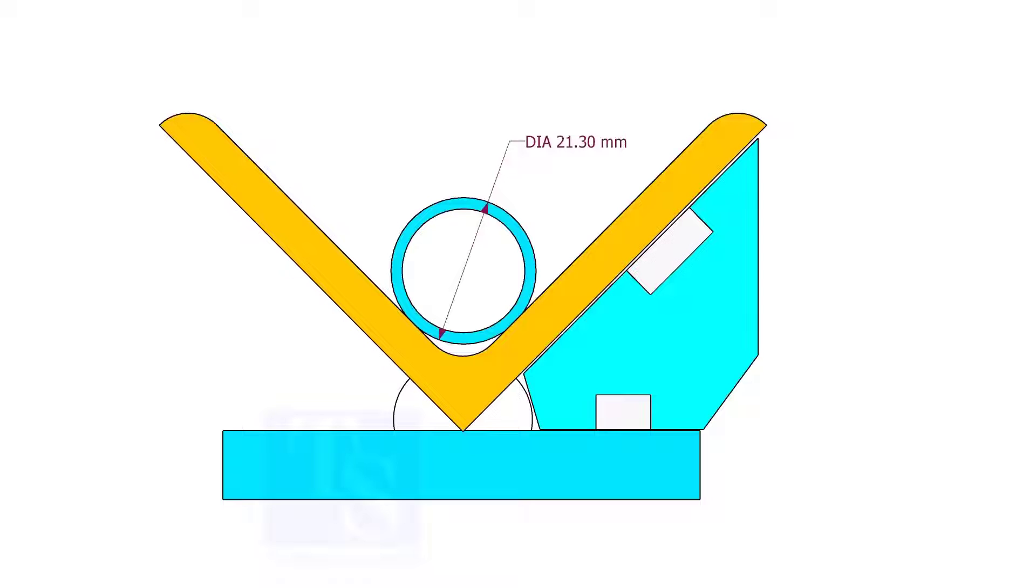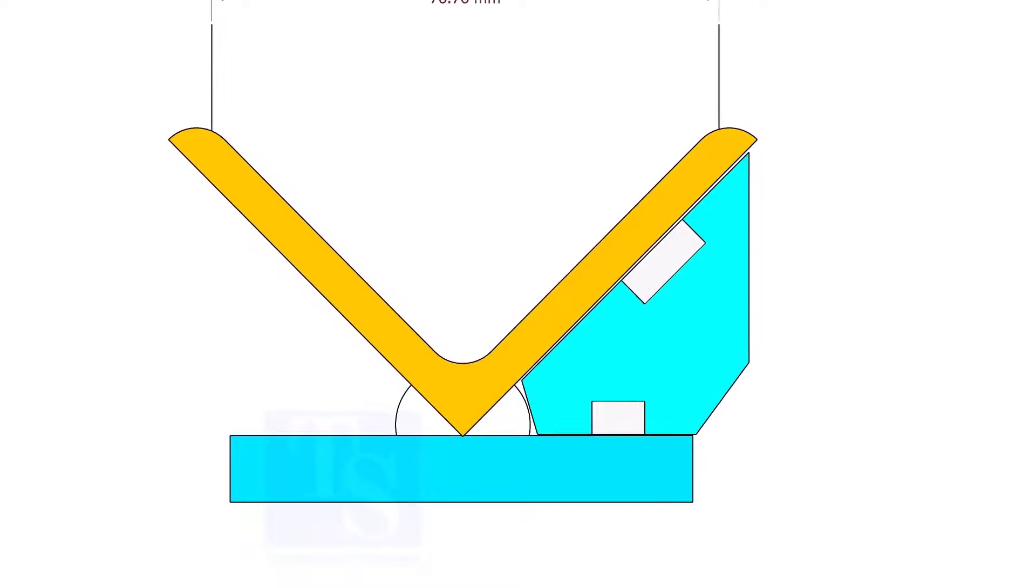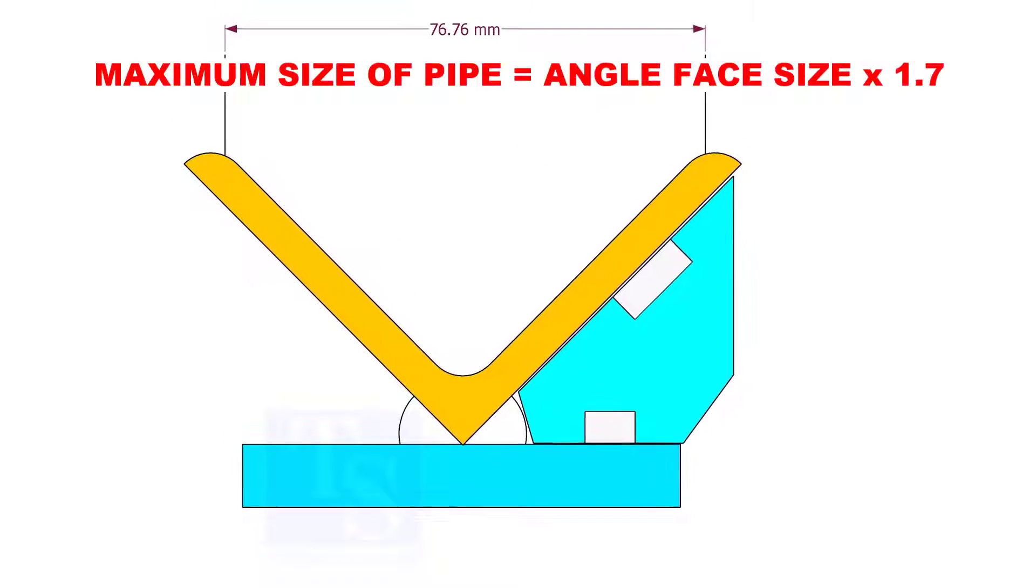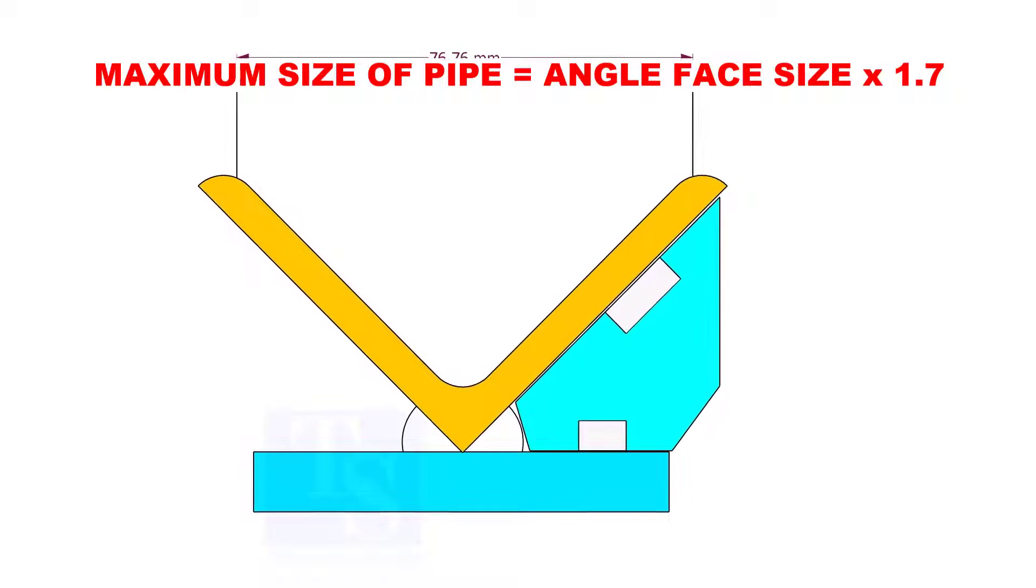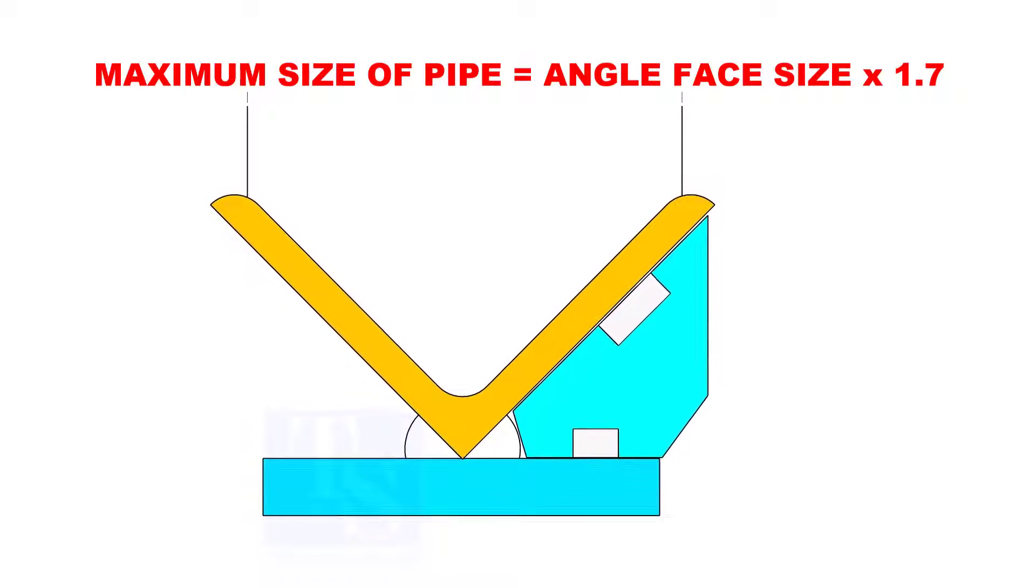In this angle jig, you can fit up any small size pipes. The maximum size of the pipe shall be determined by multiplying the width of the angle face by 1.7.